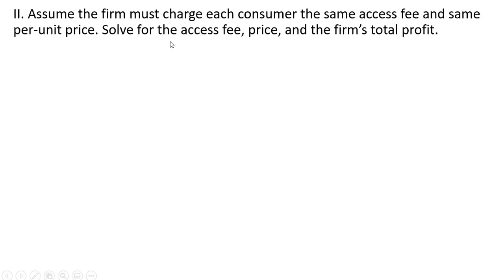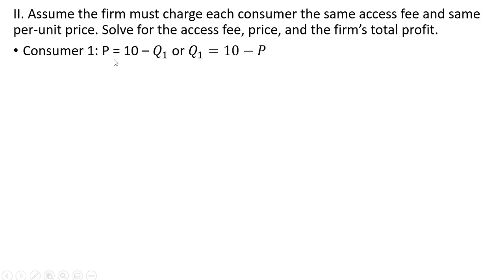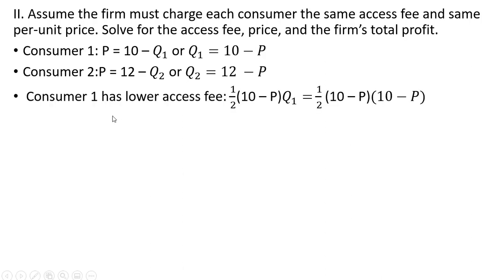In part 2, we're going to assume the firm must charge each consumer the same access fee and same per unit price. We want to solve for the access fee, price, and the firm's total profit. Consumer 1 has the lower access fee as solved in part 1, and that access fee is just the area of a triangle: one-half times the vertical intercept 10, minus price, times quantity. Since Q₁ equals 10 minus P, we substitute that in, expressing consumer 1's access fee simply as a function of price.